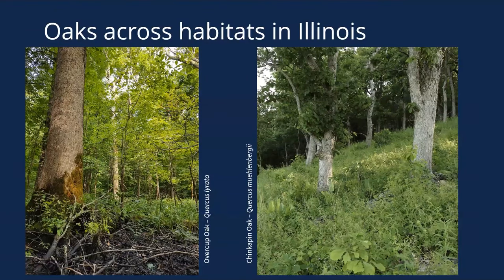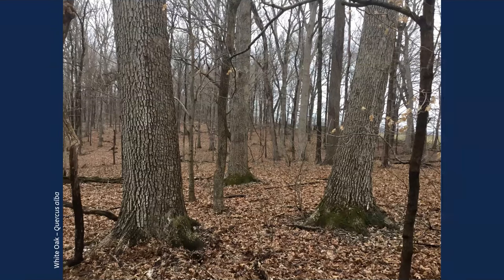Oaks occur in many different habitats — from overcup oak growing at the edge of a cypress-tupelo swamp in very wet environments, to chinkapin oak growing in limestone glades with almost no soil, in very dry conditions. Most oaks, however, fall into the mesic ecosystem — not too dry, not too wet. The vast majority of Illinois forest is upland mesic forest, your typical white oak and shagbark hickory forest, and that's where we see most of our oak species.